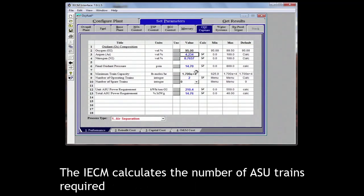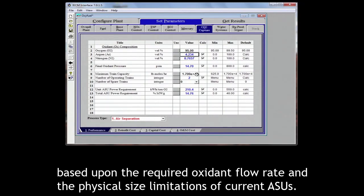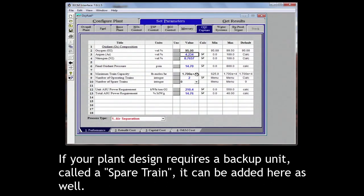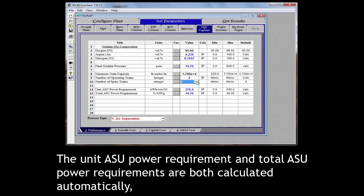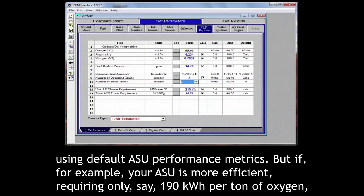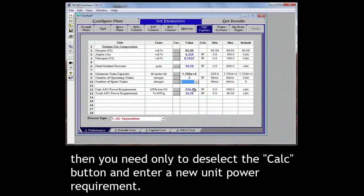The IECM calculates the number of ASU trains required based upon the required oxidant flow rate and the physical size limitations of current ASUs. If your plant design requires a backup unit, called a spare train, it can be added here as well. The unit ASU power requirement and total ASU power requirements are both calculated automatically using default ASU performance metrics. But if, for example, your ASU is more efficient, requiring only say 190 kWh per ton of oxygen, then you need only to deselect the calc button and enter a new unit power requirement.